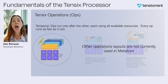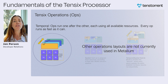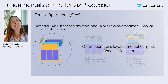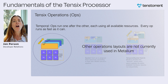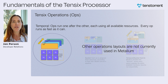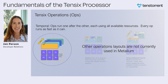In TT-Metalium, operations run using a temporal execution model. That means each op runs one after the other, using all available resources to execute as fast as possible. There's no fancy scheduling or resource splitting — each op gets full control of the hardware until it completes, and then the next one starts. Other operation layouts, like spatial or hybrid execution, aren't used in TT-Metalium. Everything follows a simple, efficient execution order where ops maximize resource utilization before moving to the next stage.